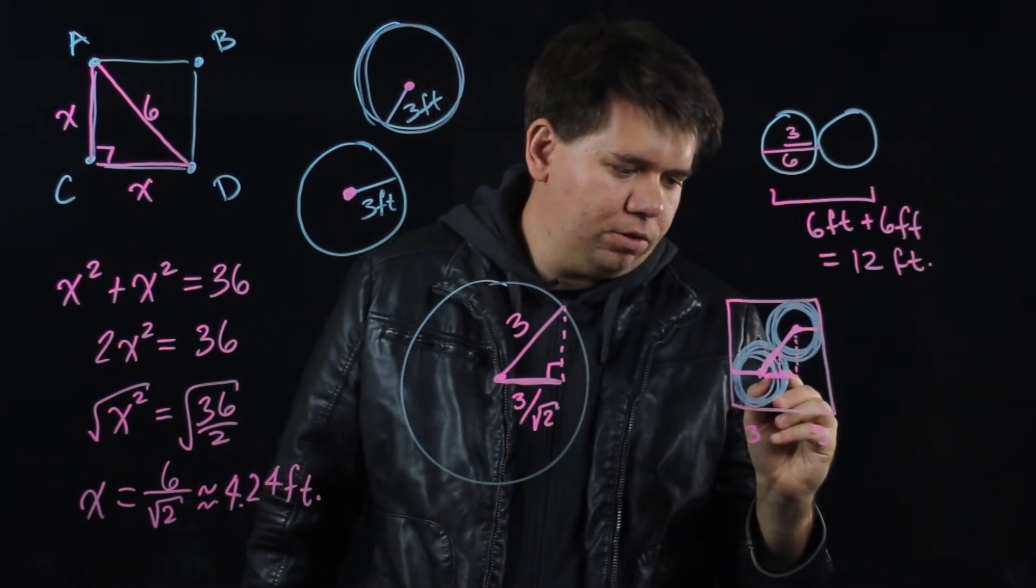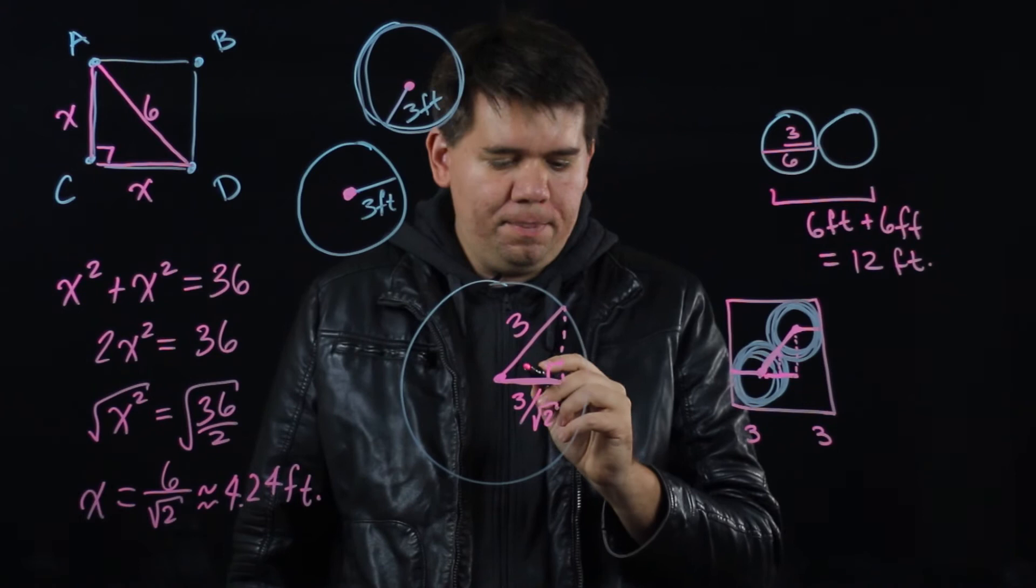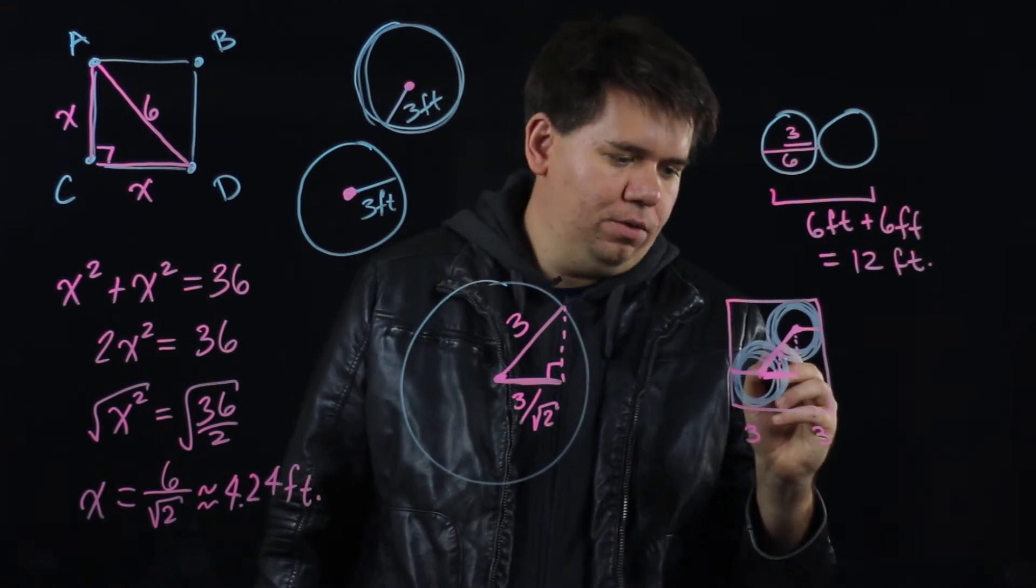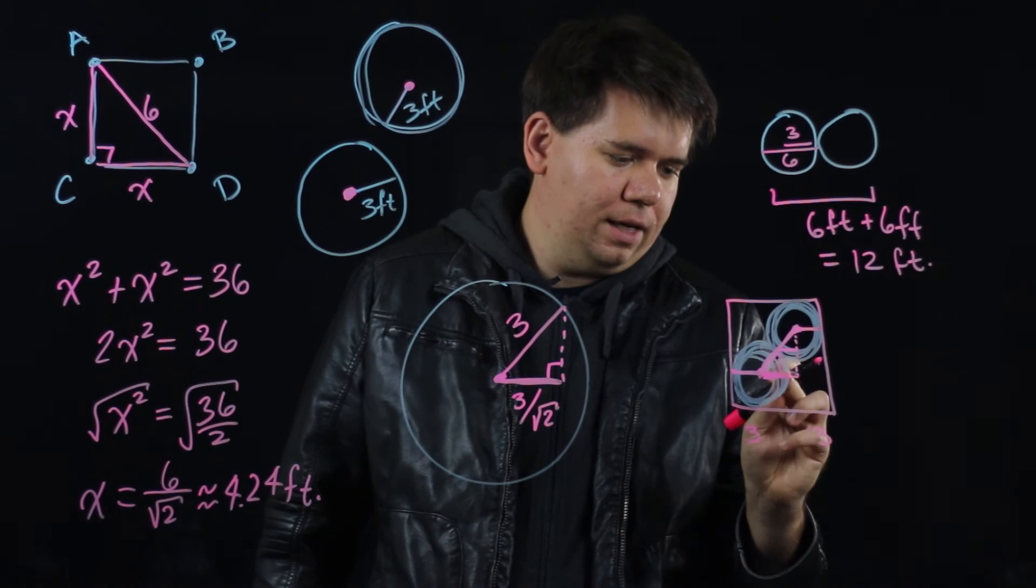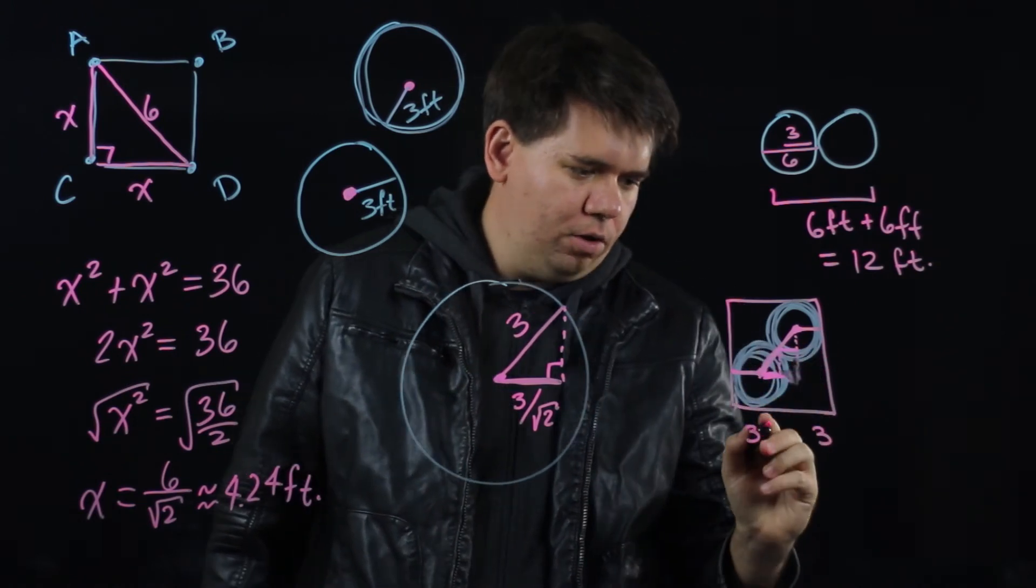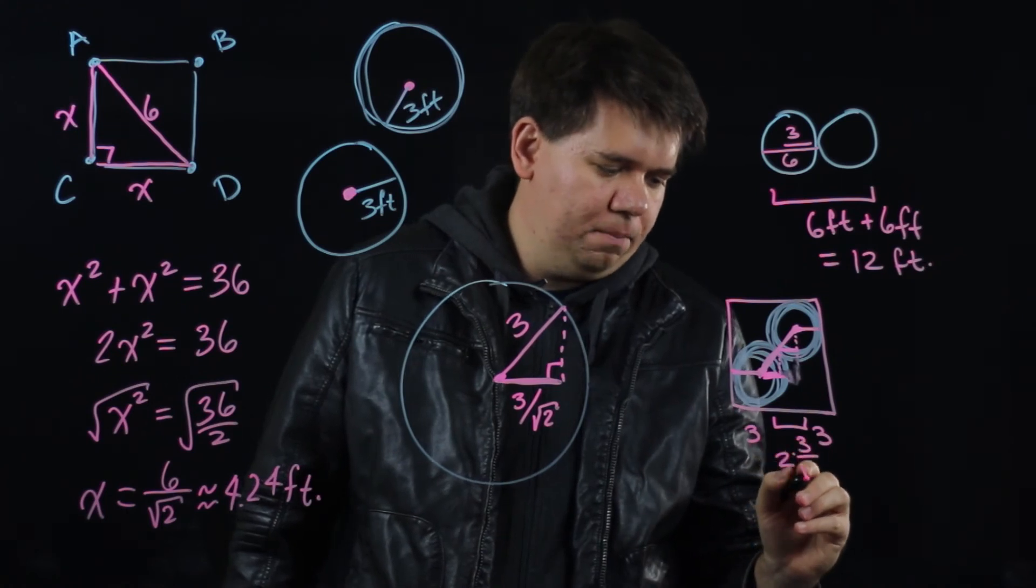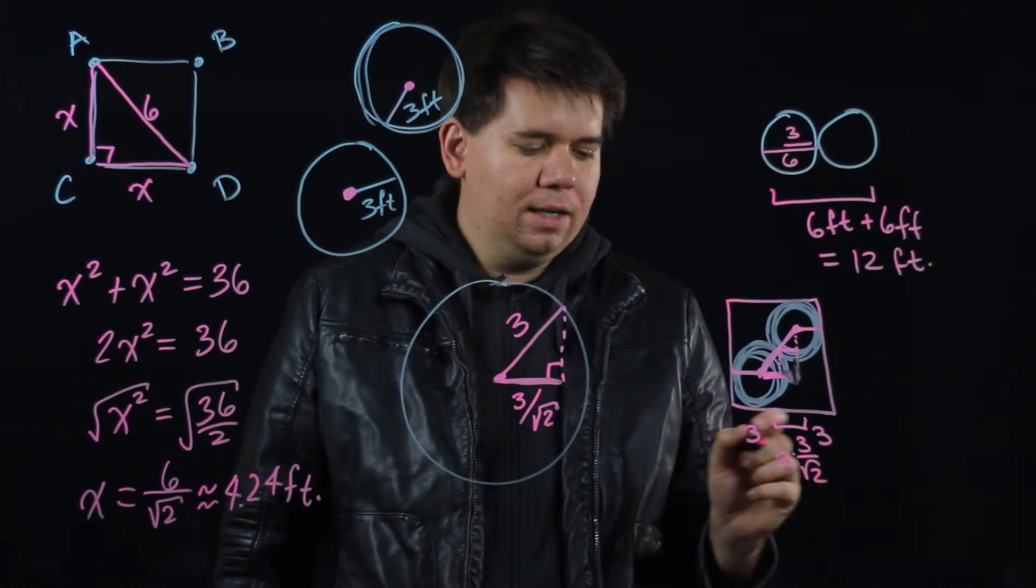So then this total distance across would just be two copies of that. Here it's 3 divided by the square root of 2, and here it's another 3 divided by the square root of 2. So between those I get two copies of 3 divided by the square root of 2. Let's add this all up.